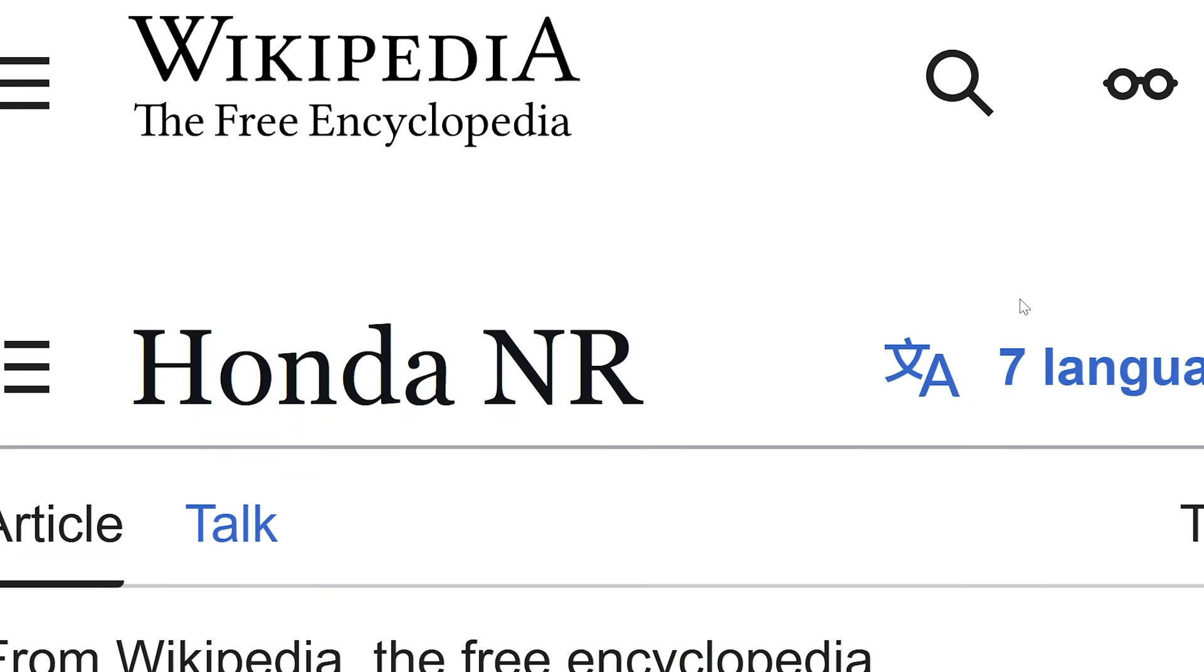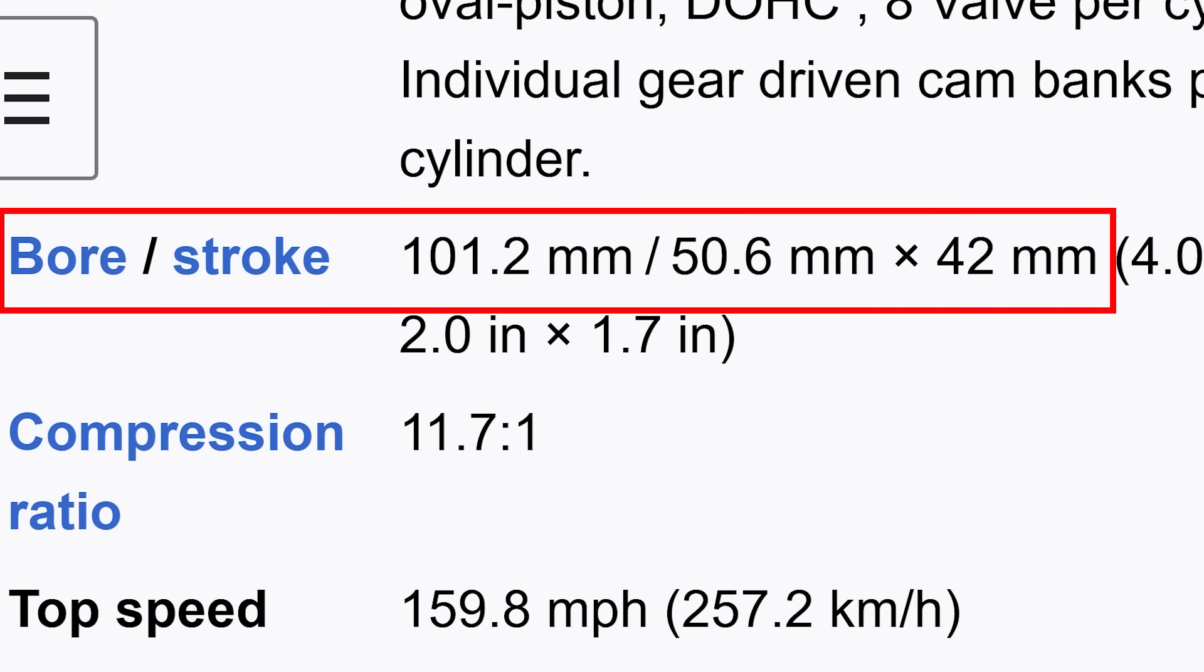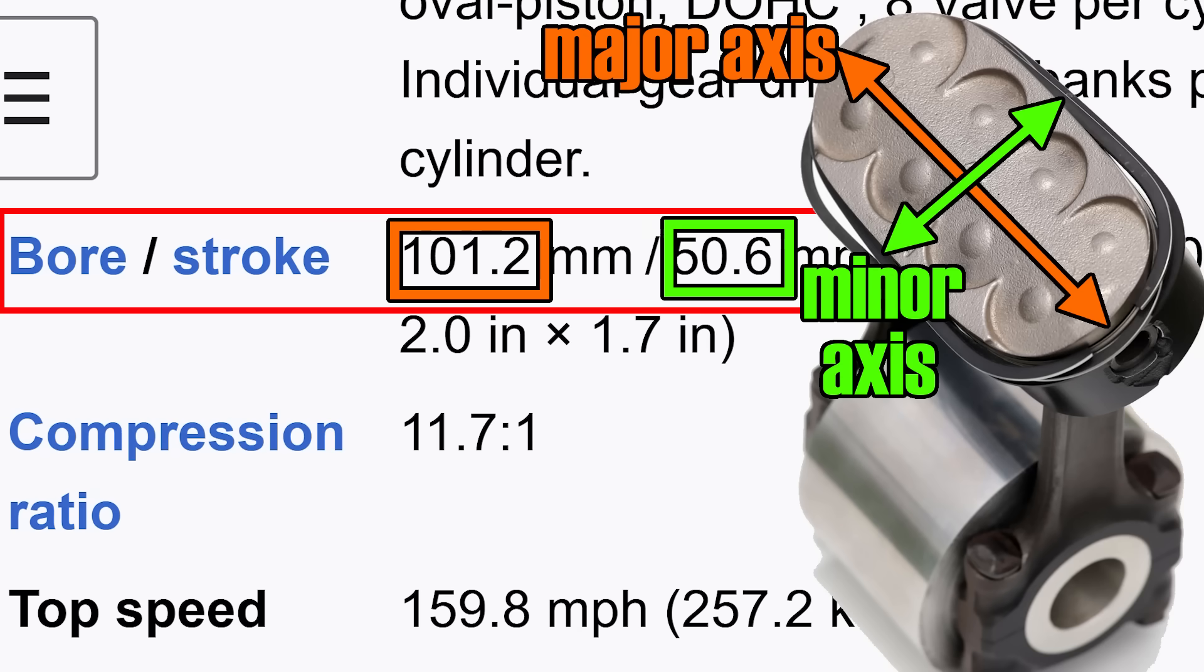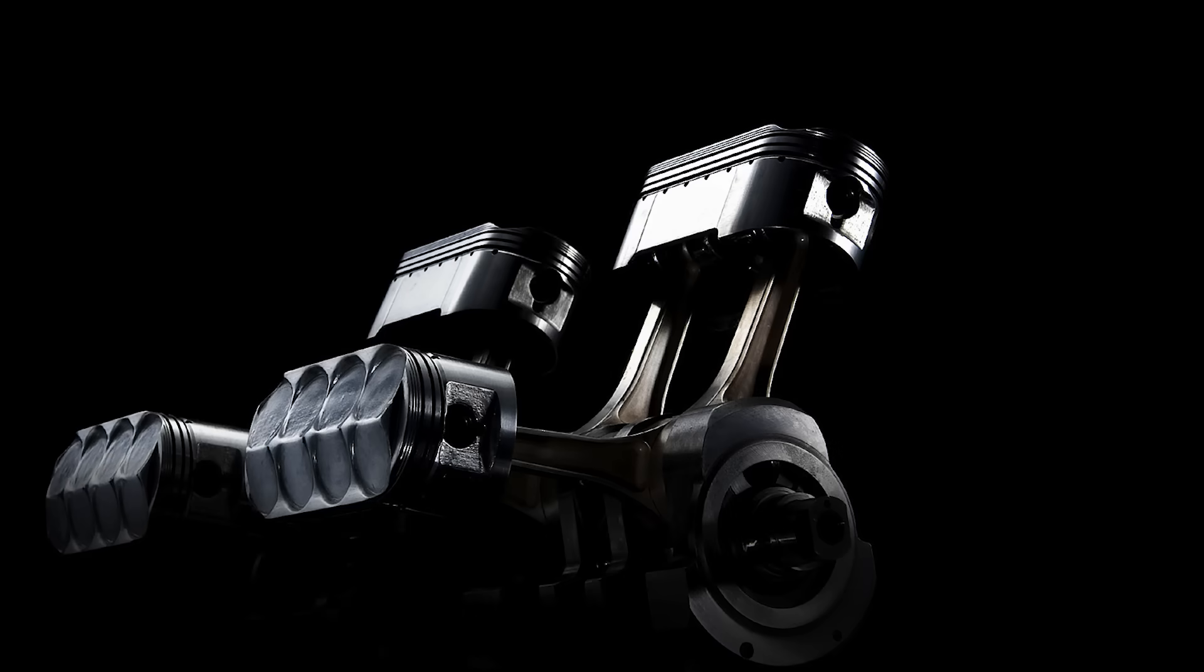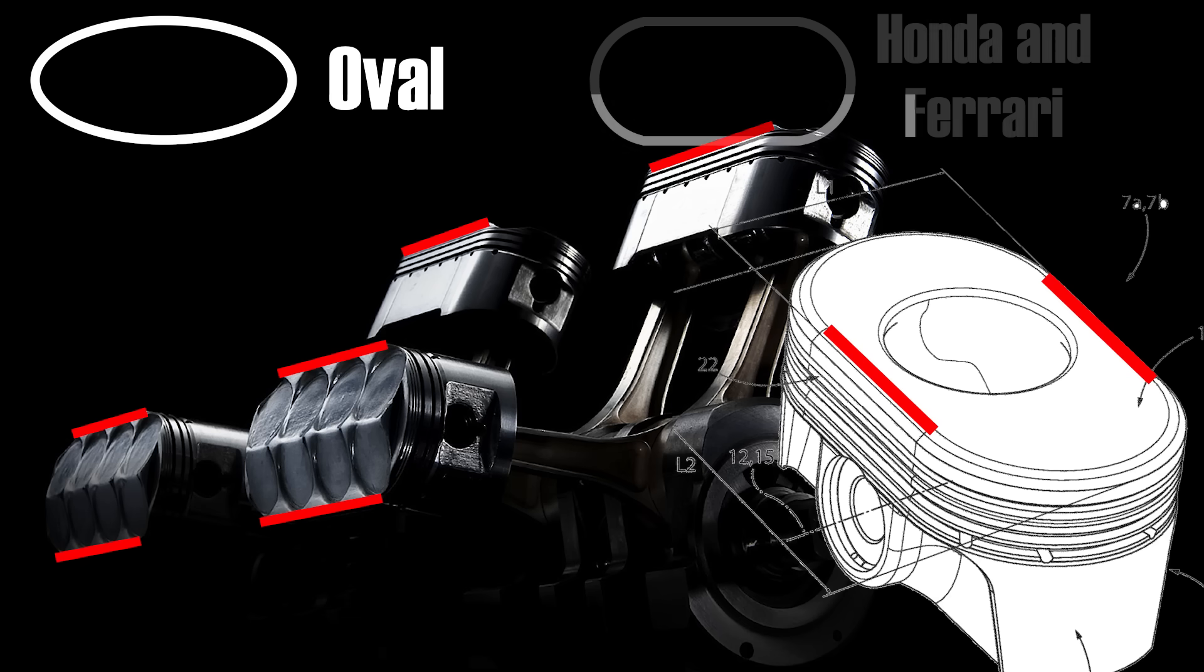If you're some sort of boring normie that has tumbled upon this channel by mistake and never heard about Honda's oval piston stuff, then you can correct your very embarrassing knowledge gap by watching the video in the card. Now, if we go to the Wikipedia page of the NR bike and go to bore and stroke, we're going to find three numbers, two for bore and one for stroke. This is because an oval piston has a major axis and a minor axis. Effectively, it has two diameters.